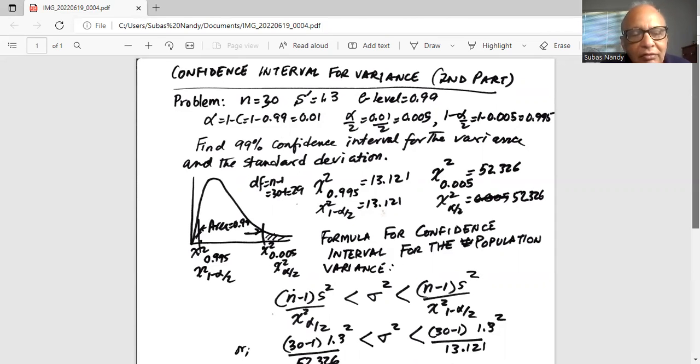So area to the right of the left tail is 1 minus 0.005 which is 0.995, and area to the right of the right critical value in the right tail is 0.005, which is chi-square 0.005, and that value is 52.326.